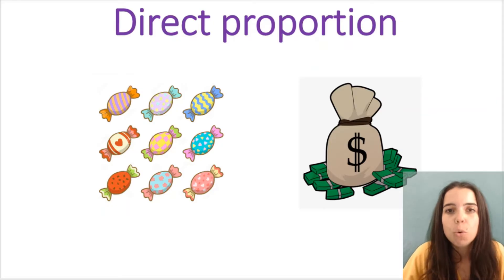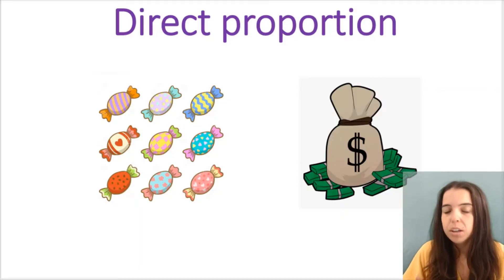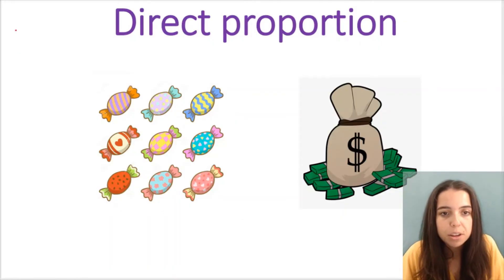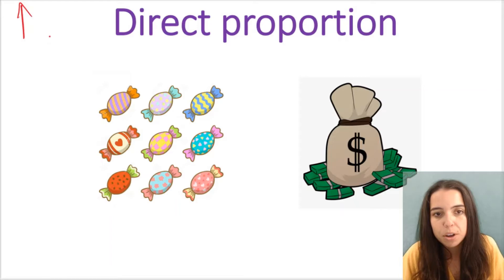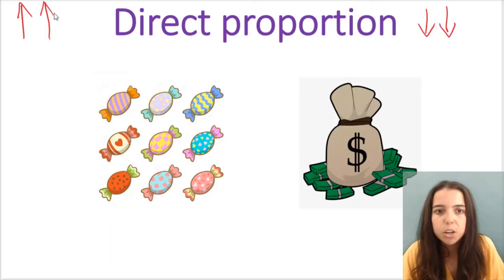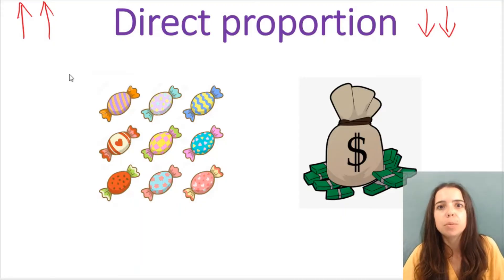Now, first of all, what is the difference between direct and inverse proportion? Direct proportion refers to a relationship between two variables where if the one variable goes up, the other variable will go up — they do the same thing. If one variable goes down, the other variable will go down as well. So if one variable increases, so does the other; if one variable decreases, so does the other decrease.